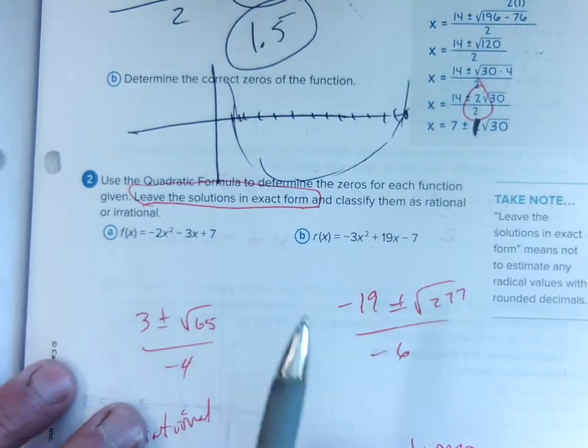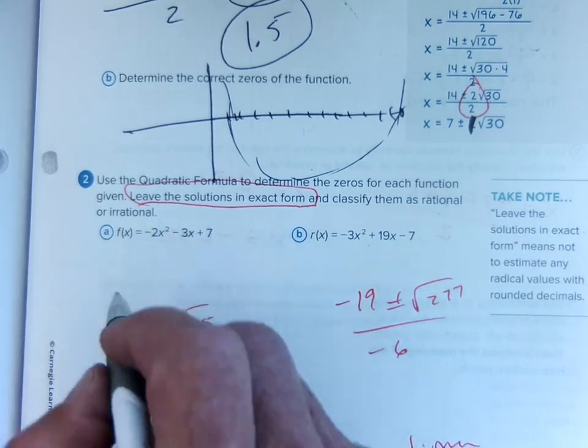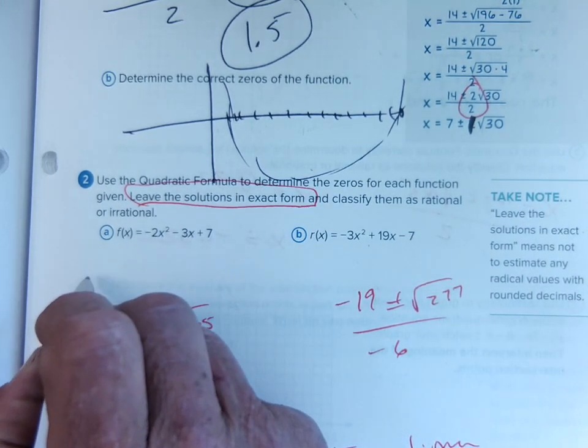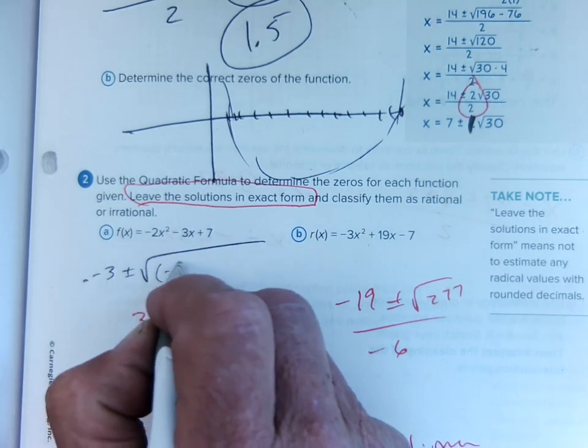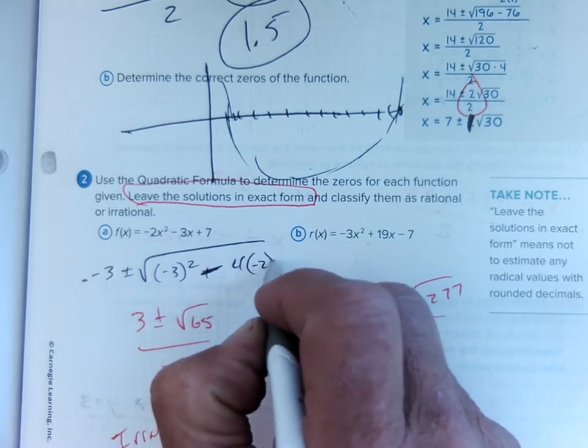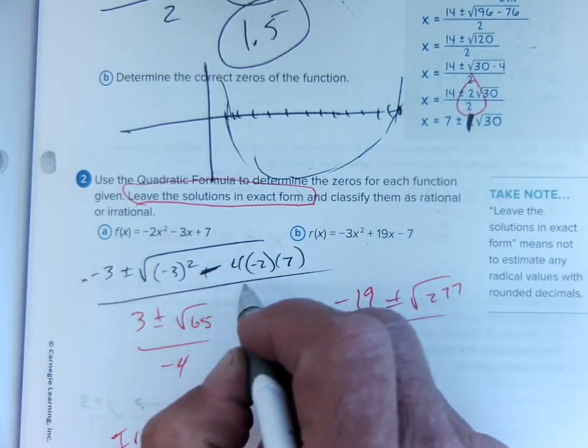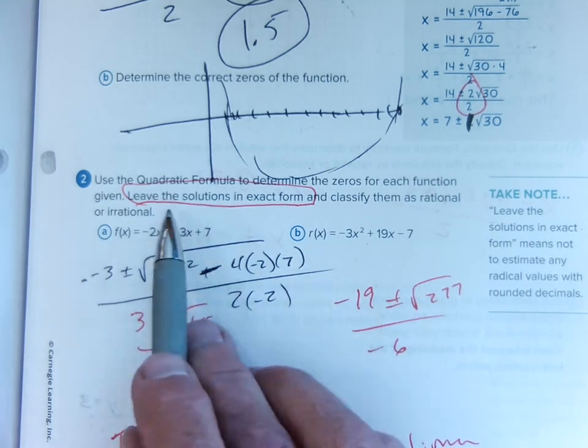Now this one we did the quadratic formula, we did the negative b plus or minus, negative negative b plus or minus square root of b squared minus 4 times a times c all over 2 times a. And we simplify it, it says that they want an exact form, so I had to leave it as a square root of 65.